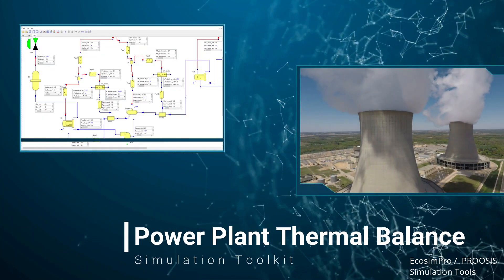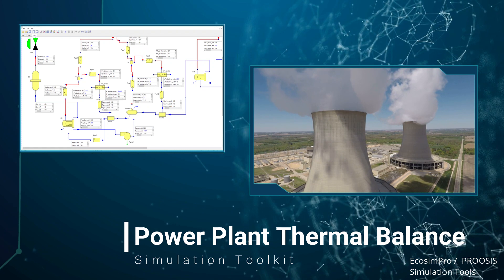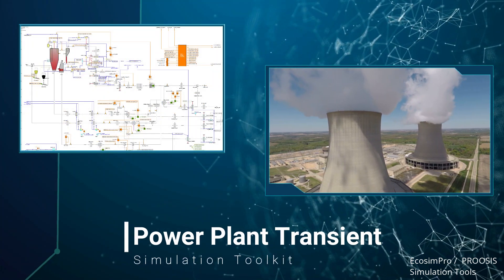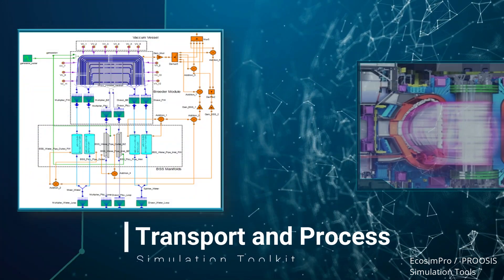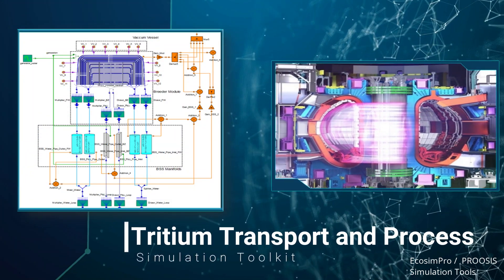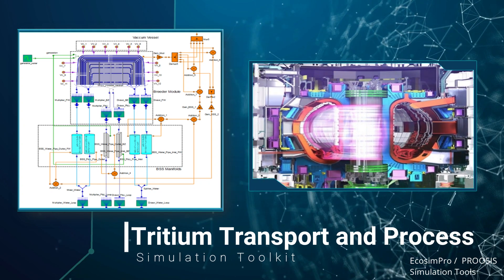The thermal balance toolkit is used to carry out steady-state thermal balance studies in typical power plants such as coal, combined cycle, nuclear, and solar thermal. The tritium toolkit is used to simulate systems involving hydrogen isotopes in order to study transport phenomena as well as the physical and chemical processes regarding the extraction and purification of tritium.